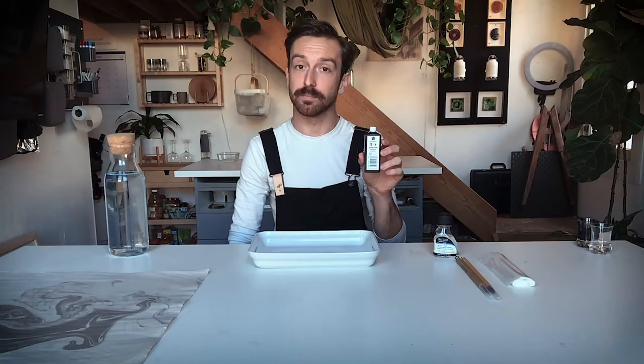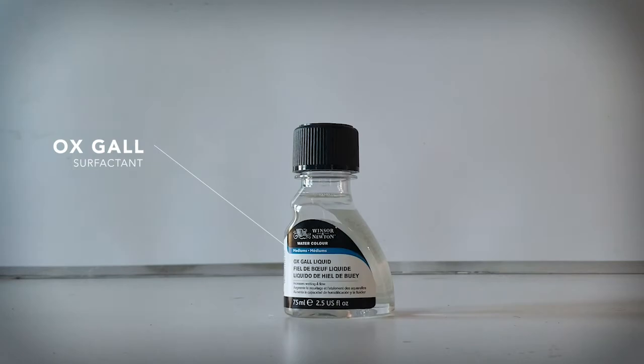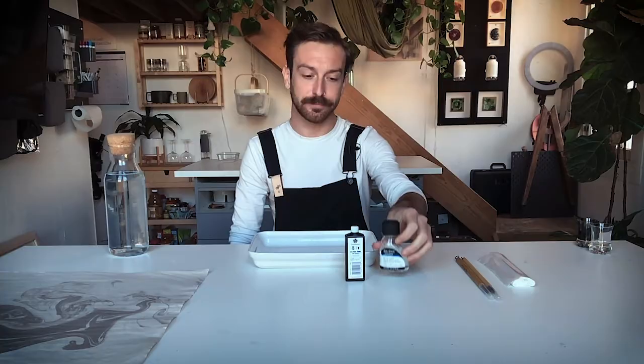You'll need sumi ink. This is a charcoal based ink that you can find at most local art stores. You'll need a surfactant, which is just a fancy word for something that lowers the surface tension of water. Today I will be using Oxgall. This is something you can find in the paint aisle of an art store. If you can't locate Oxgall, there's another product called Kodak Photoflow that you can use, which you should be able to find online.